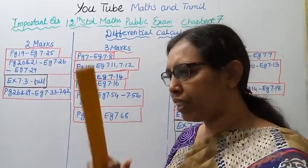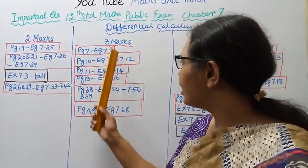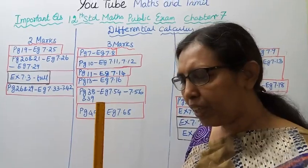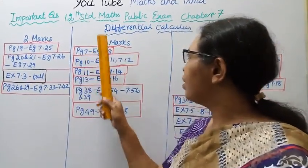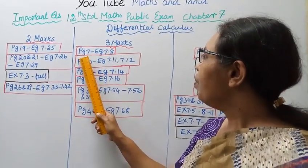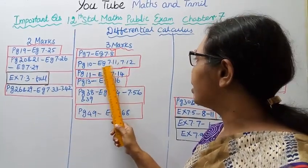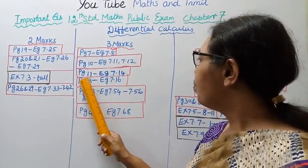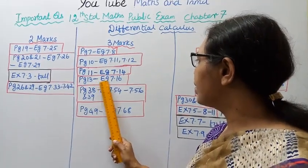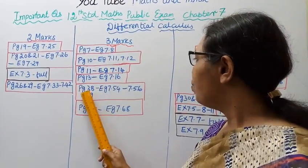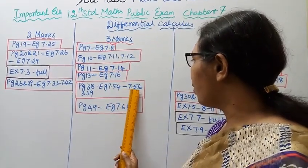For 2-mark examples and exercises, practice accordingly. For 3 marks, the following examples are important — do them and note them. If you do the examples, exercises will become easy. Volume 2 book, page 7: example 7.8. Page 10: example 7.11, 7.12. Page 11: example 7.14. Page 13: example 7.16. Page 38-39: example 7.54, 7.56.